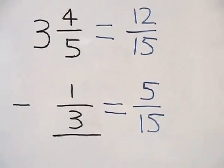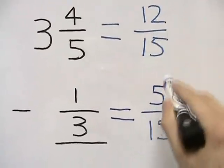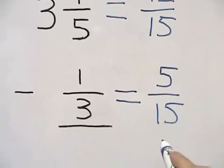Now, all we do is subtract our two numerators. So we're going to take 12, subtract 5. That leaves us with 7.